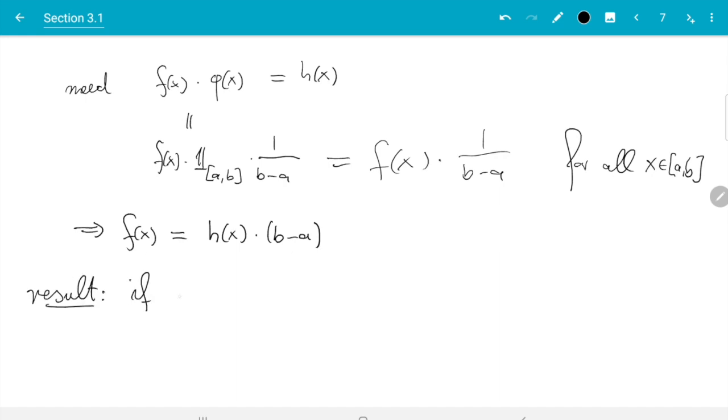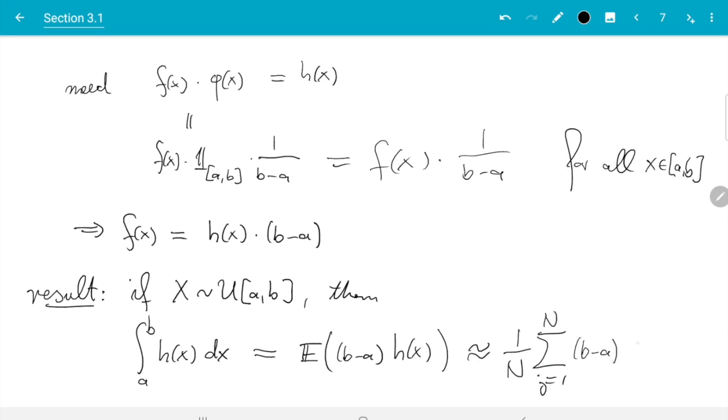So the result is if x is uniform distributed on [a,b], then expectation of (b-a) h(x) equals integral from a to b h(x) dx. And now I want to swap these terms so that I can continue with the expectation. We can approximate that as 1 over n sum j from 1 to n of (b-a) times h(xj), where xj are uniformly distributed on the interval [a,b] and these are independent and identically distributed.